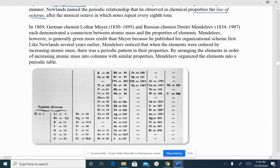In 1869, we have two major things happening. We have the German chemist Lothar Meyer and the Russian chemist Dmitry Mendeleev. Let me couch this in that Dmitry Mendeleev published first. They each demonstrated a connection between atomic mass and properties of the elements. Mendeleev is generally given more credit than Lothar Meyer because he published first, and like Newlands several years earlier, Dmitry Mendeleev noticed that when the elements were ordered by increasing atomic mass, there was a periodic or a cyclical pattern in their properties.